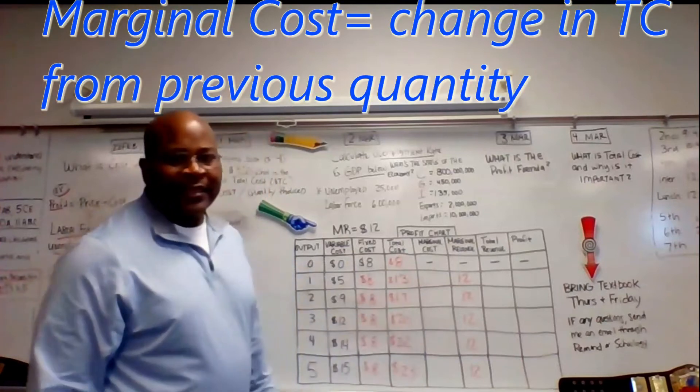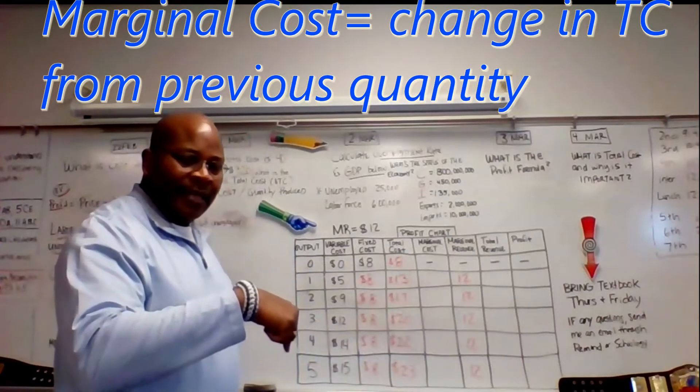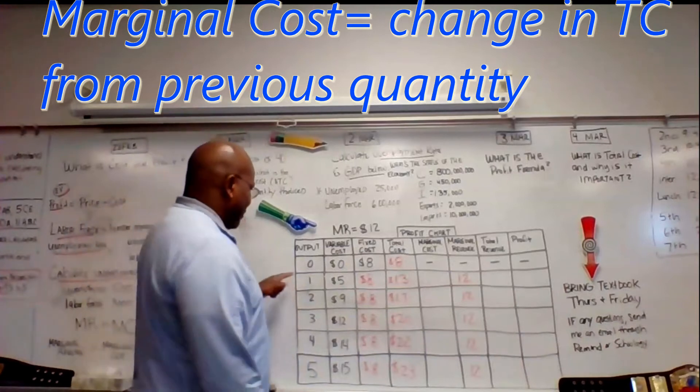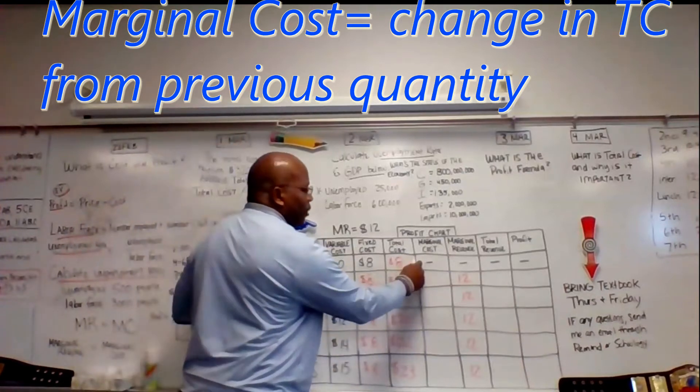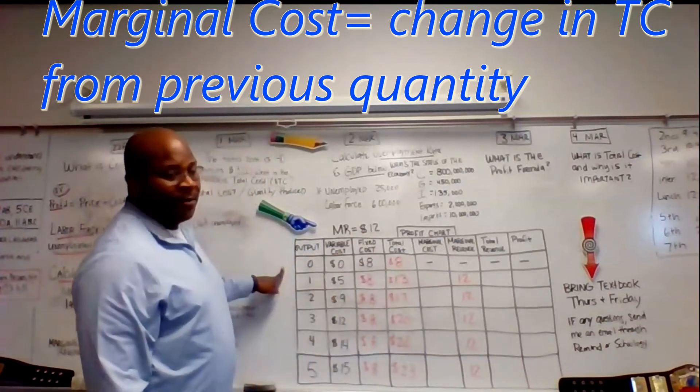Now, marginal cost is the difference from that previous product to the current product. For instance, for zero output, there is no marginal cost and there's no previous output.